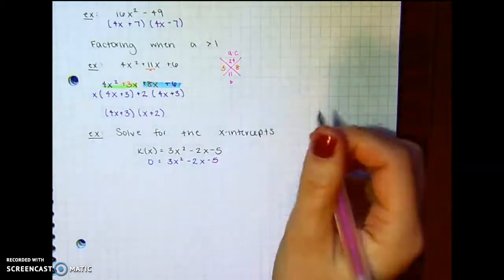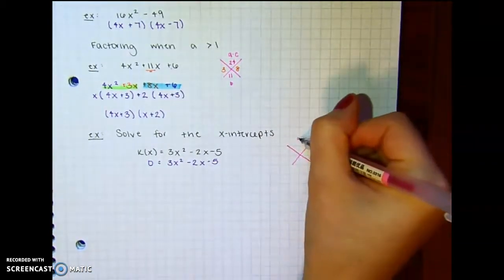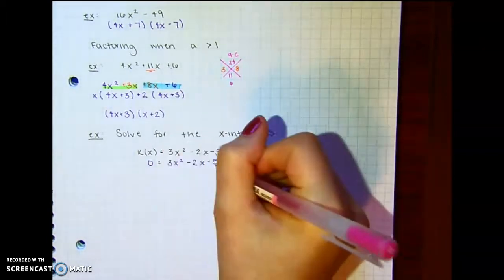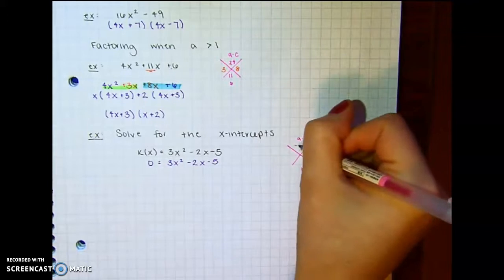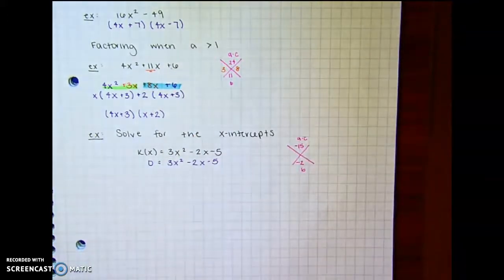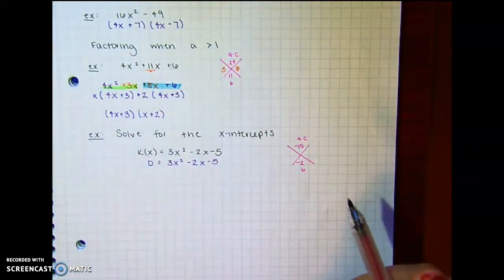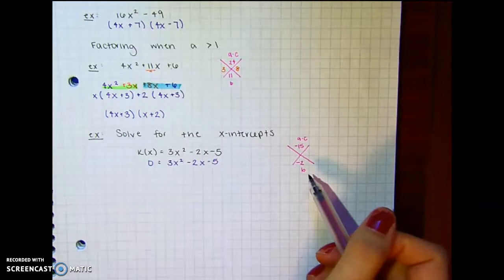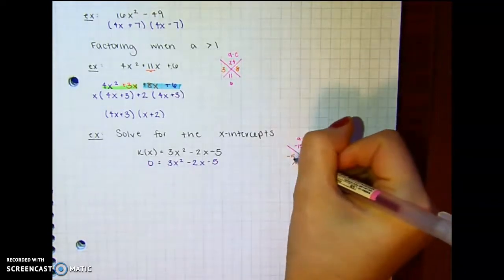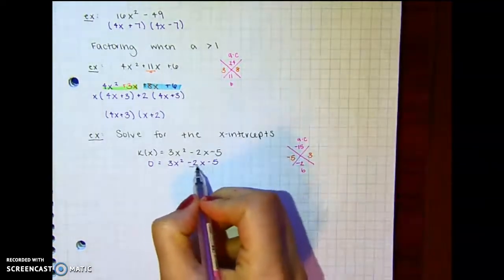So we can't factor out a greatest common factor. What multiplies to a times c and adds to equal b? So 3 times negative 5 and b is negative 2. So what multiplies to be negative 15 and adds to equal negative 2? So if it's negative, I know 1 has to be positive and 1 is negative. So negative 5 and 3, right?